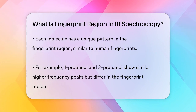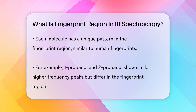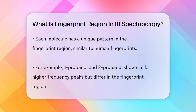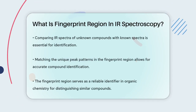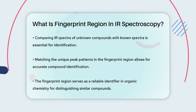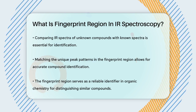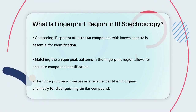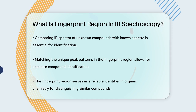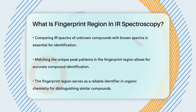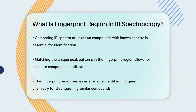To identify an unknown compound, you match its IR spectrum — especially the fingerprint region — with known spectra. This is done by comparing the unique pattern of peaks in the fingerprint region to a database of known spectra. If the patterns match, you can confidently say what the compound is.